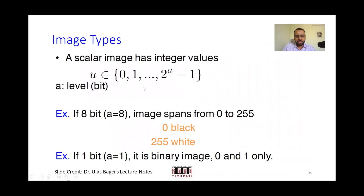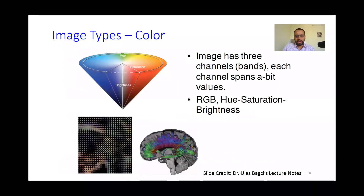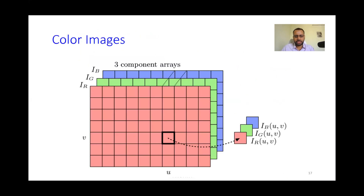To recap: with k bits, you can represent values from 0 to 2^k − 1. With 8 bits, that's 0 to 255 (unsigned, no sign bit). With 1 bit, you can represent 0 or 1. For color images, it's a set of three values at each (x, y) location across three 2D arrays. There are also other color representations such as HSI (Hue, Saturation, Intensity) and HSB, in addition to RGB.